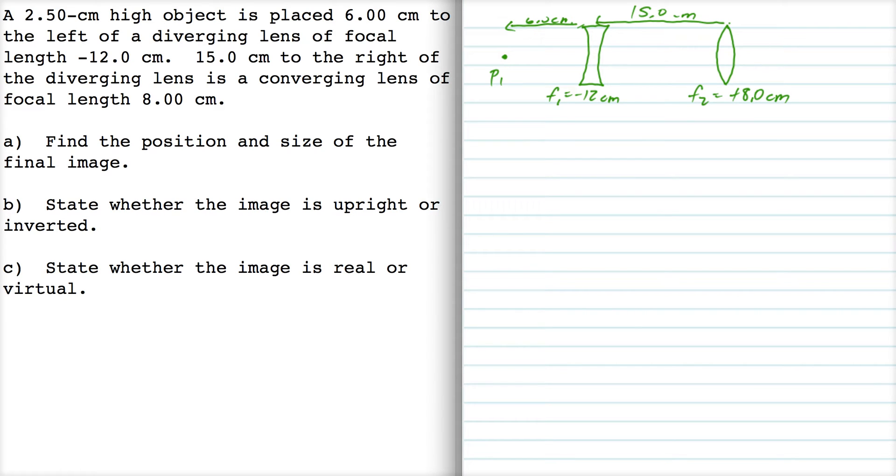So we have to resolve a multi-lens system. We're going to start by dealing with lens number 1. For lens number 1 we have P1 is 6 cm. And our equation is 1 over P1 plus 1 over Q1 equals 1 over F1.